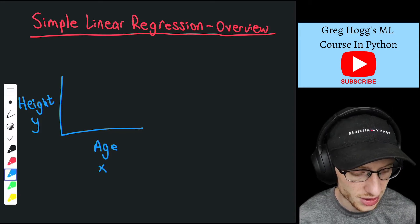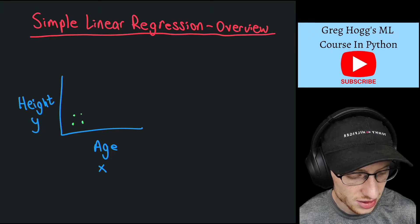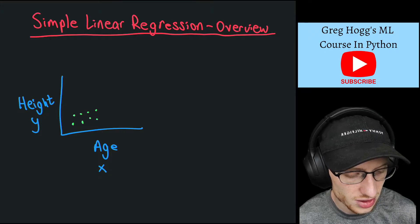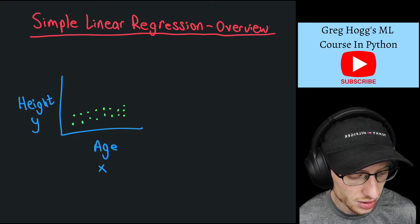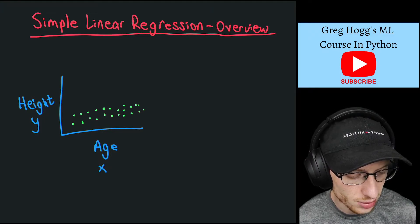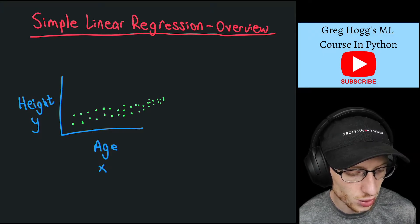It's simple linear regression because I'm only using the age value to try and predict the height value. There's no reason that I couldn't have used their gender or any other information that we have about the person to try and predict their height, but in simple linear regression we're only using one variable.